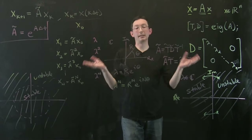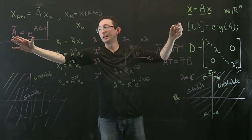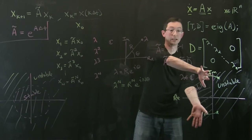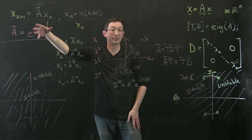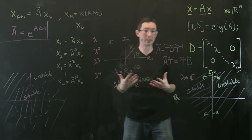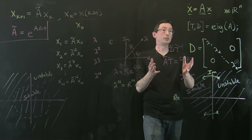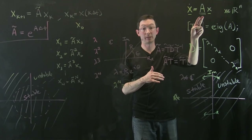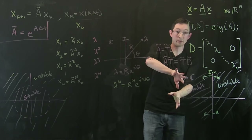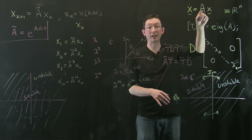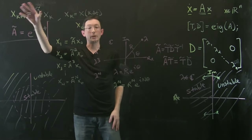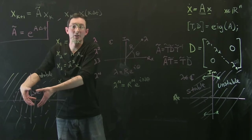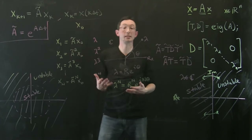Interestingly, the matrix exponential relating Ã and A is a conformal map between these two complex planes, and the stable unit circle maps exactly to the left half plane under that map — which is really beautiful complex variable theory. But the key takeaway is that stability in continuous or discrete time completely depends on the eigenvalues of your matrix.